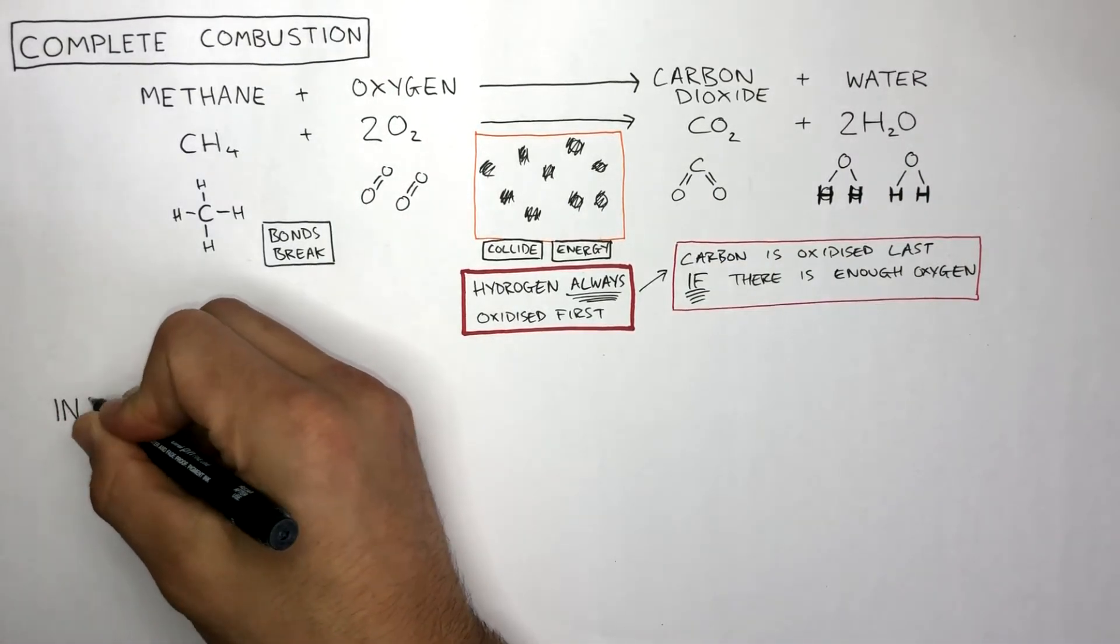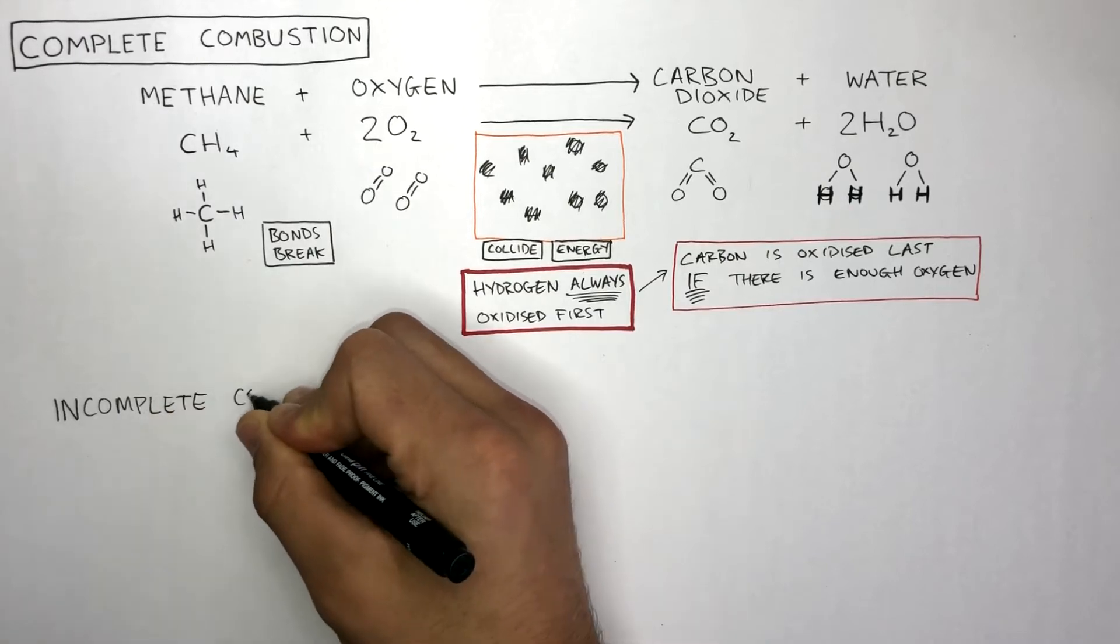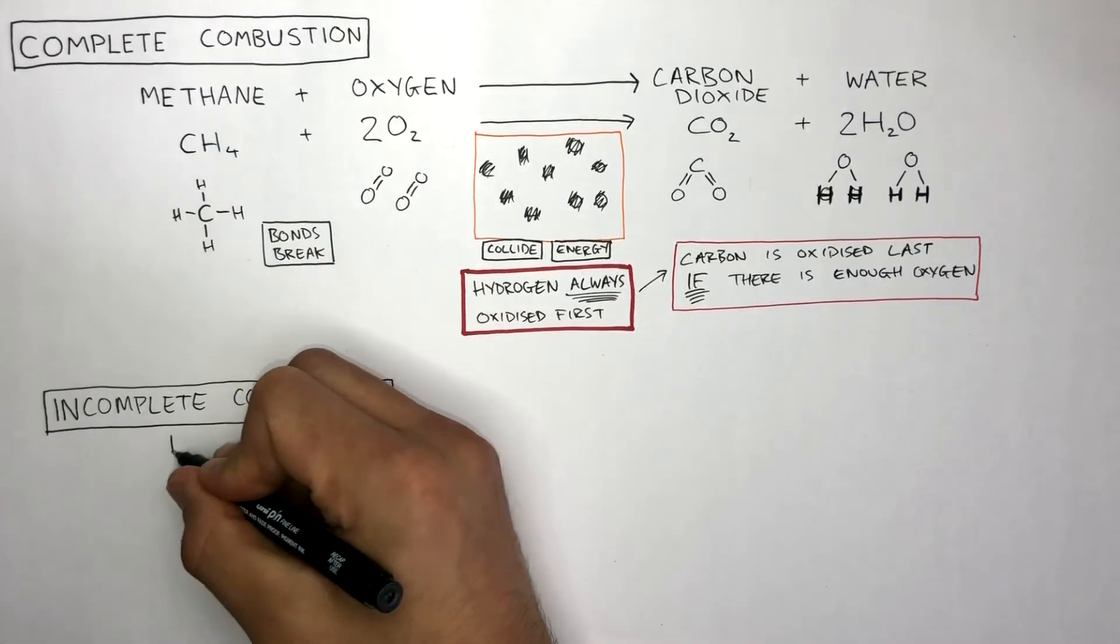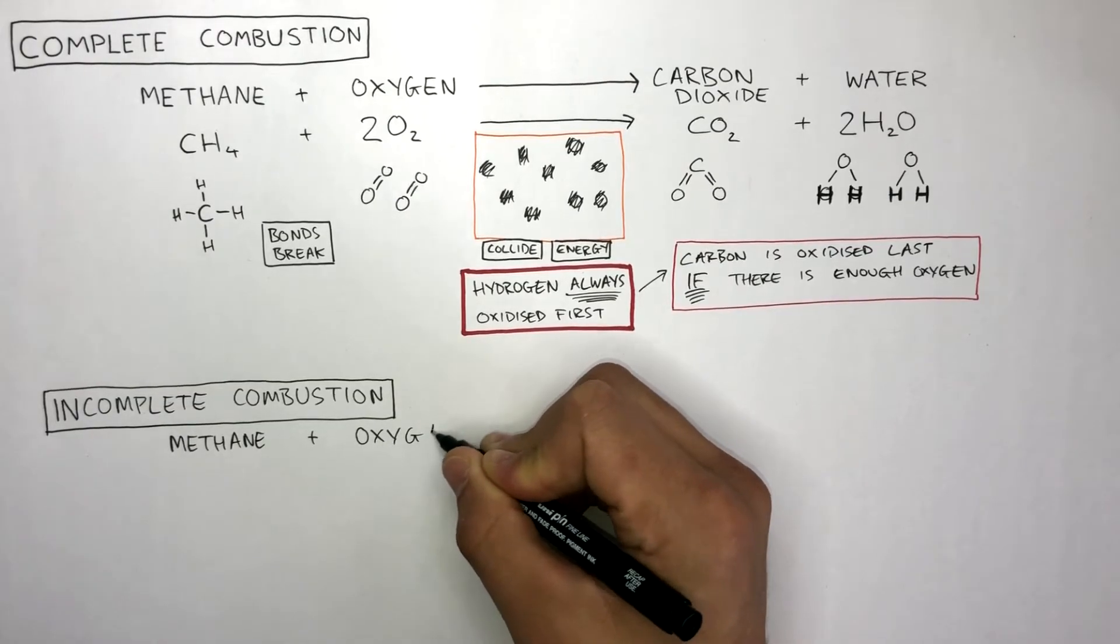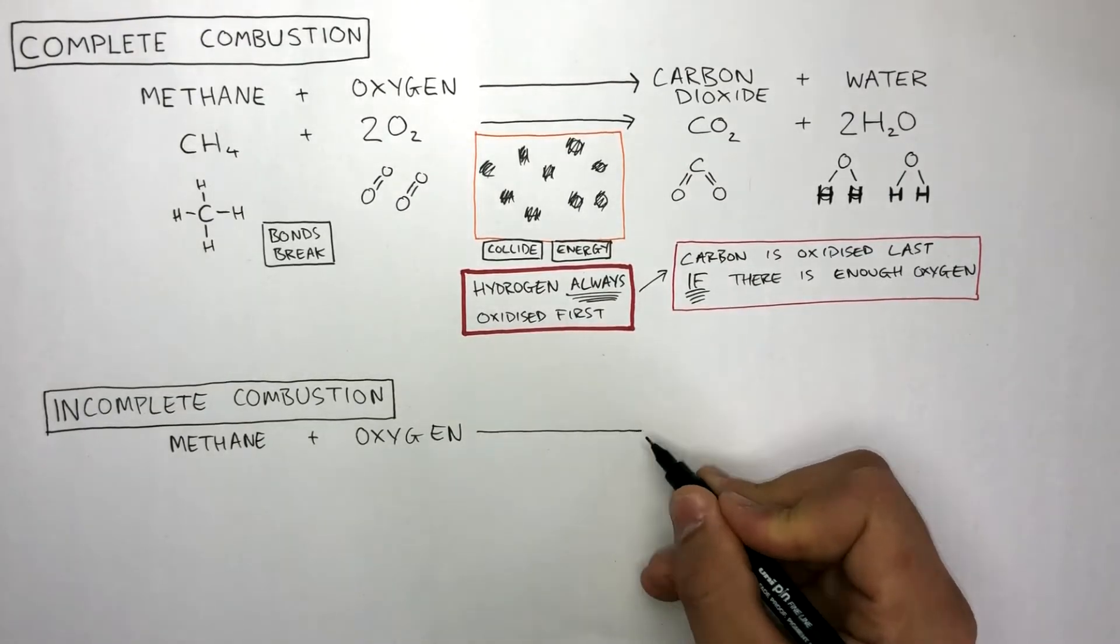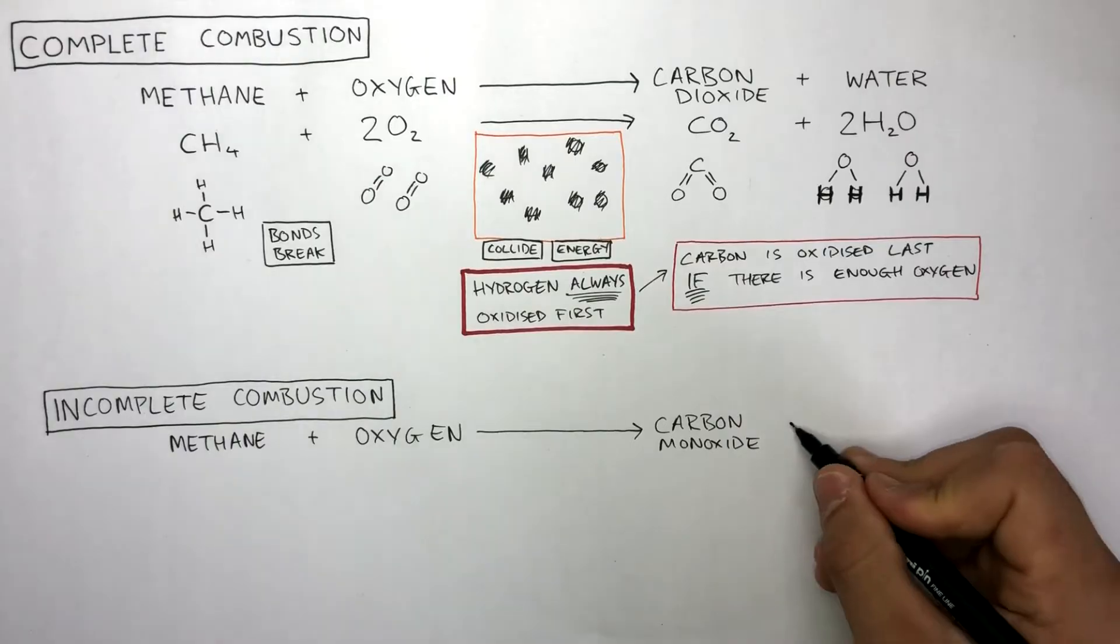Incomplete combustion is combustion with a limited supply of oxygen. Let's take a look at how methane reacts with a limited supply of oxygen to produce carbon monoxide and water.